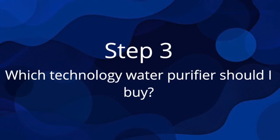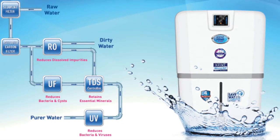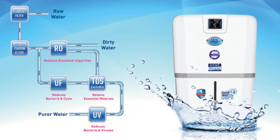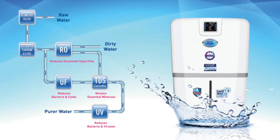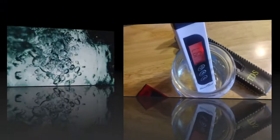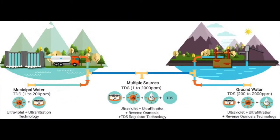Step 3: which technology water purifier should I buy? We discussed the technologies in aspect 1 to be ready to answer this more accurately. It depends on the source of water and TDS level that you test. For municipal water with TDS 1 to 200 parts per million, you can use UV or UF technology, or even both. For multiple sources water with TDS 1 to 2000 parts per million, you can use RO, UV, UF, and TDS technologies — your water purifier should have all these technologies.